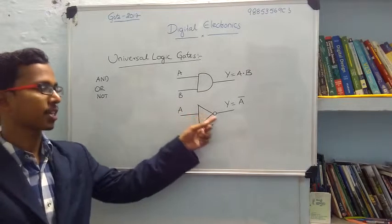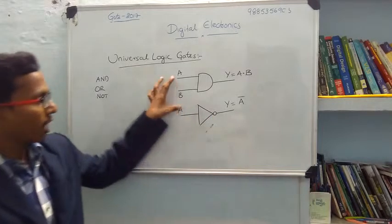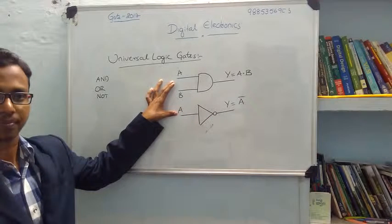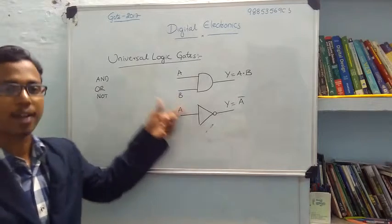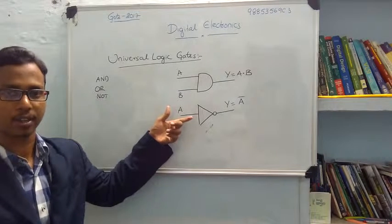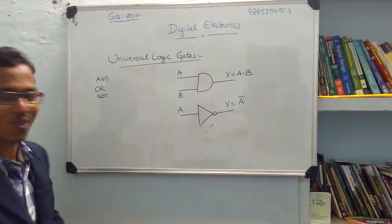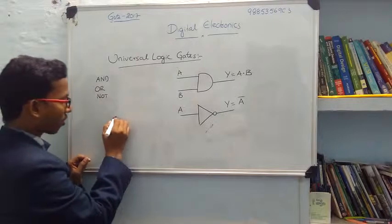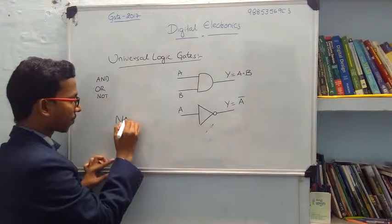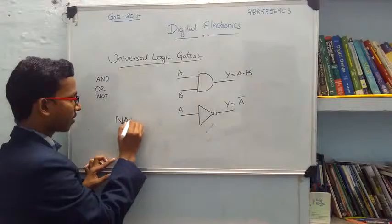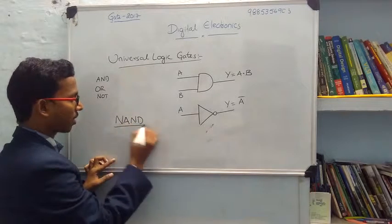The NOT gate is represented by a bubble. Now we are combining these two gates to form another gate. That is called NAND gate. We are calling a gate called NAND.